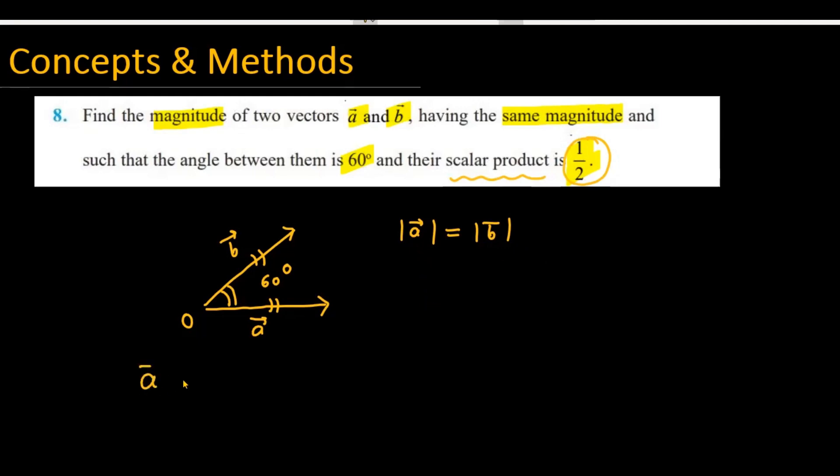We know that the dot product of two vectors is A⃗·B⃗ = |A||B| cos θ, where θ is the angle between the two vectors.